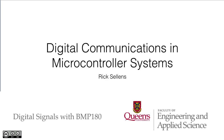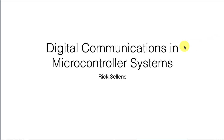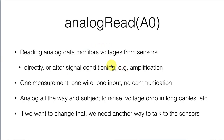We've done some analog read input in our microcontroller systems, and we've been using digital communications on USB for a while, so it's time we found out a little bit more about this stuff. The analog read statement allows us to monitor voltages directly from sensors — analog voltages — and we could do some signal conditioning like amplification, but to make one measurement we need one wire attached to one sensor going to one input, and there's not much communication going on other than this is the signal level.